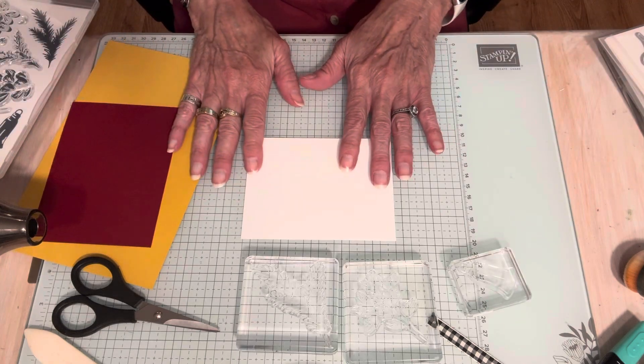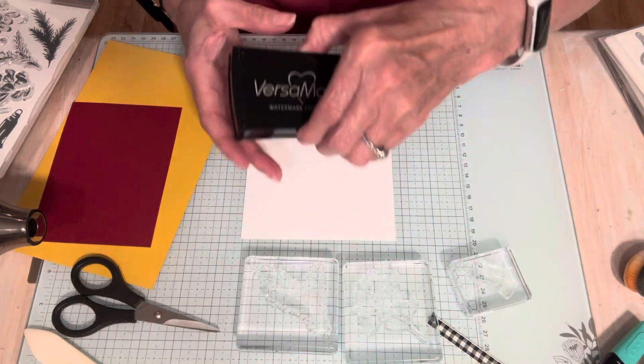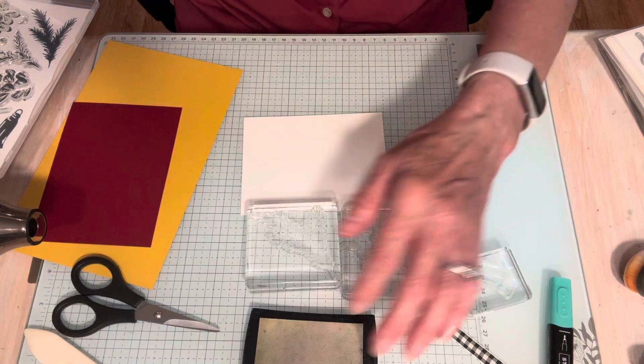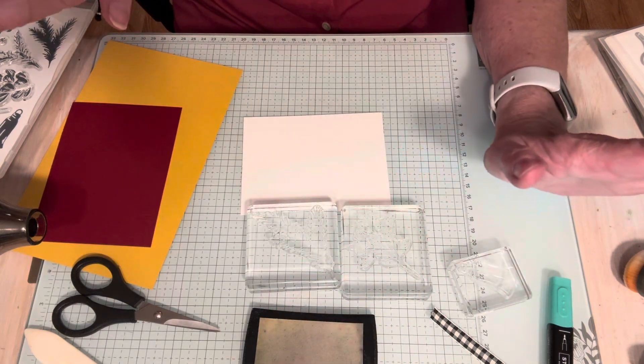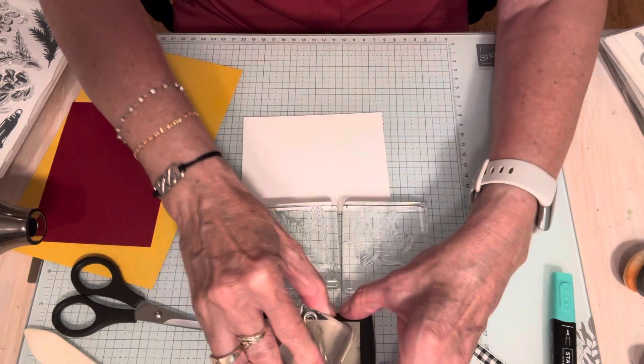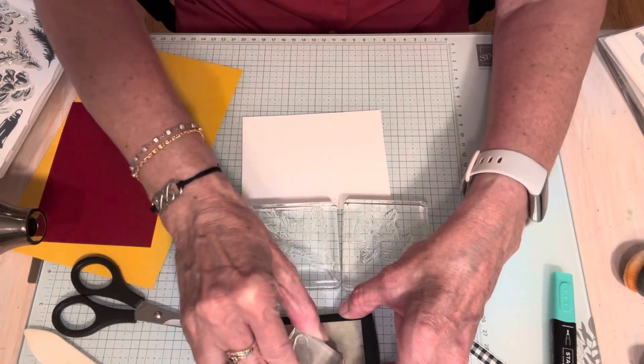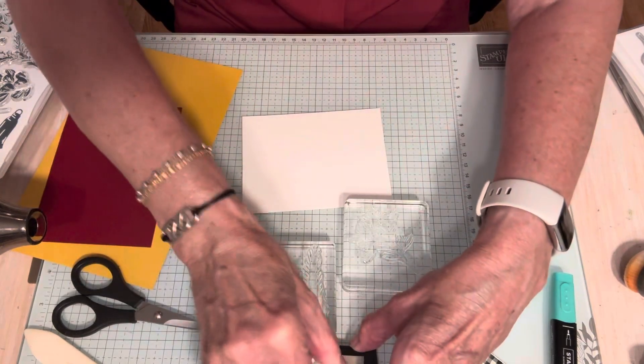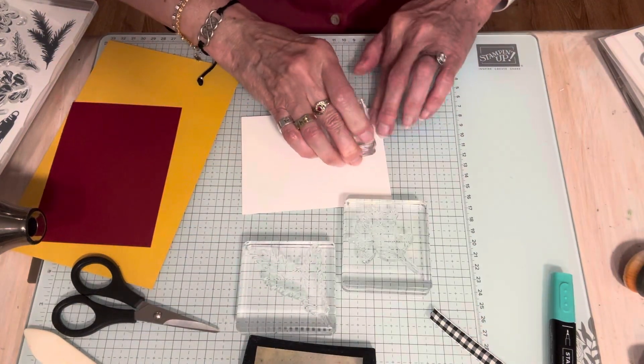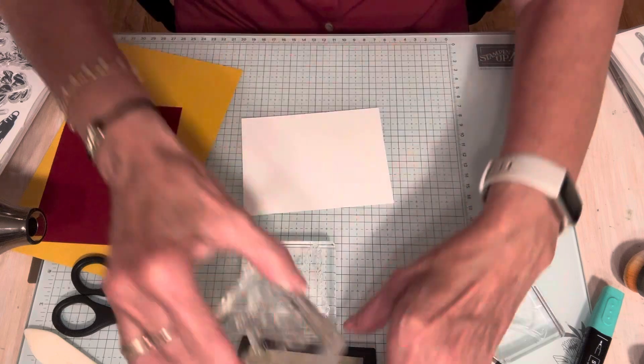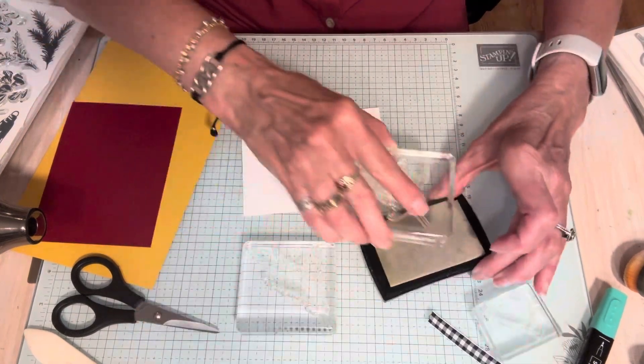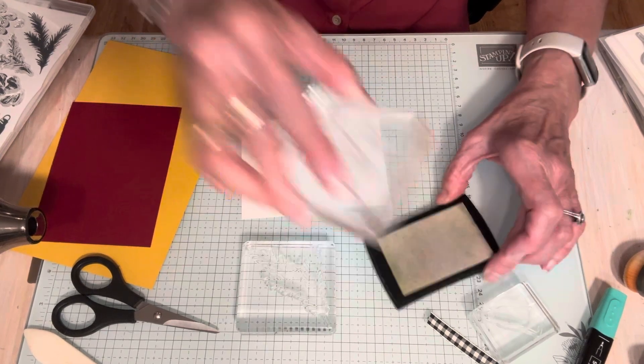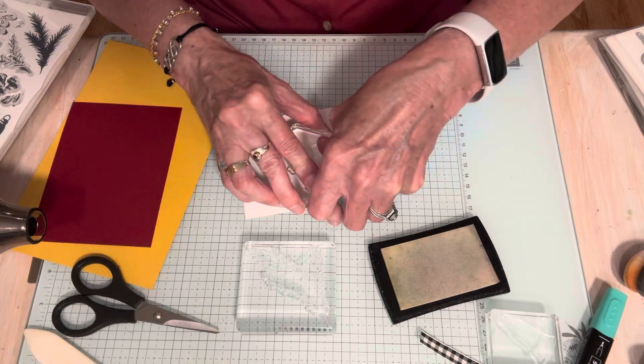So you do need your Versamark pad. This is the watermark pad that is re-inkable. This is a very sticky ink I should mention. So first thing I'm going to do is stamp a few of these bells. I like to start with the small stamps and then work around those. So I'm going to stamp a couple of these.